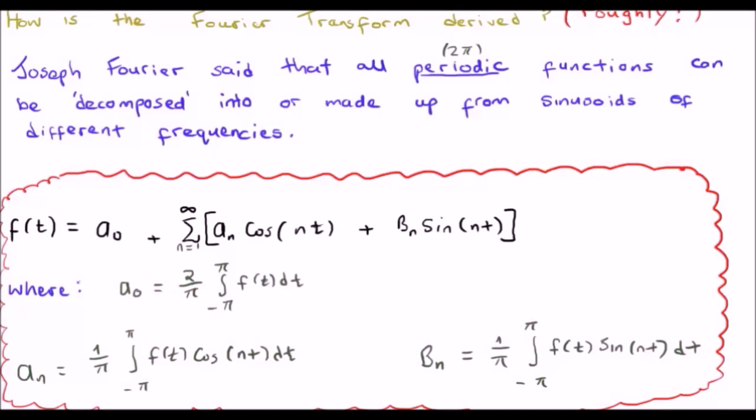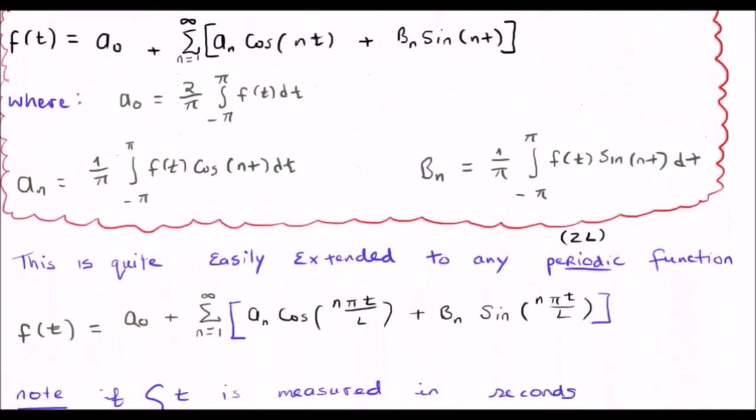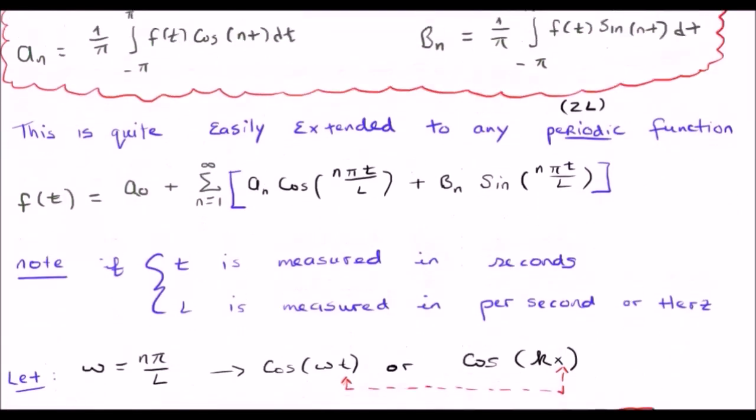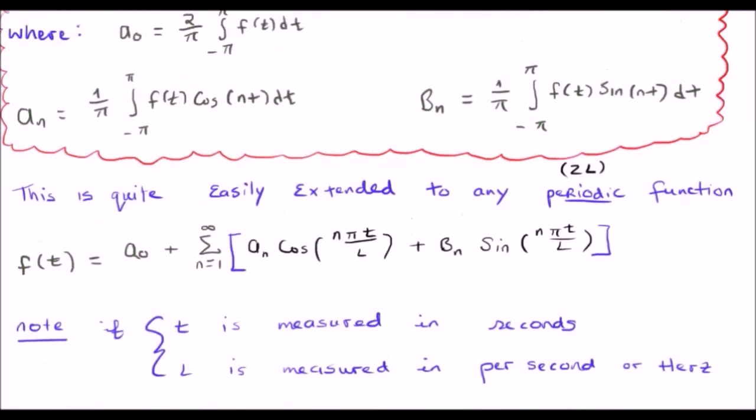Now we are able to extend from 2 pi periodic functions to periodic functions of 2L using this particular form of the Fourier series. That's nothing new I would hope. And as I've said on numerous occasions at this stage that if our function is in the time domain, t is measured in seconds,